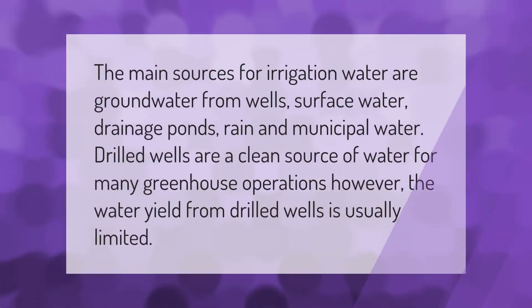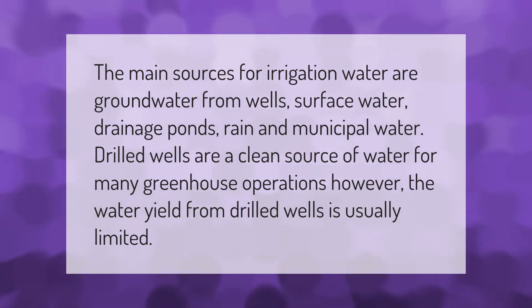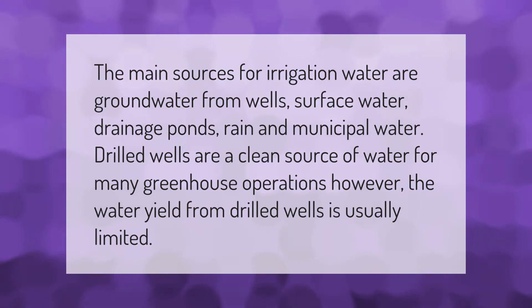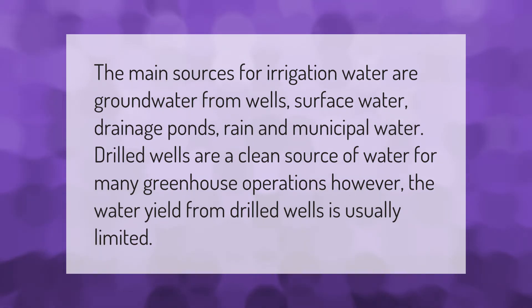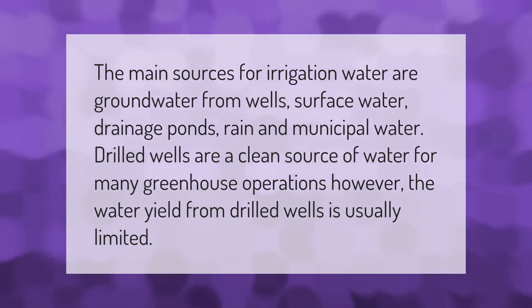The main sources for irrigation water are groundwater from wells, surface water, drainage ponds, rain, and municipal water. Drilled wells are a clean source of water for many greenhouse operations; however, the water yield from drilled wells is usually limited.